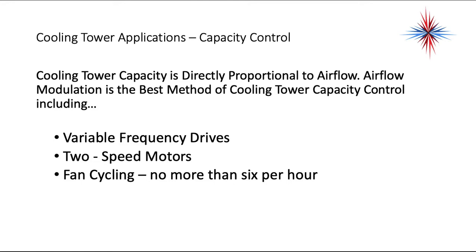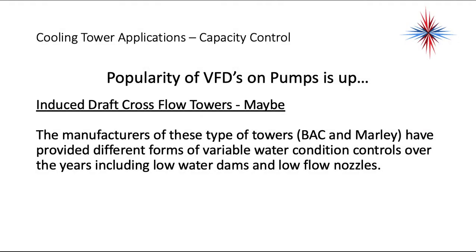The best method of cooling tower capacity control is on the air side, using variable frequency drives, two-speed motors, and fan cycling no more than six cycles per hour. We might have a temperature swing of the water in the tower, but we do not want to cycle the fans on and off more than six times per hour — the motors will eventually wear out.